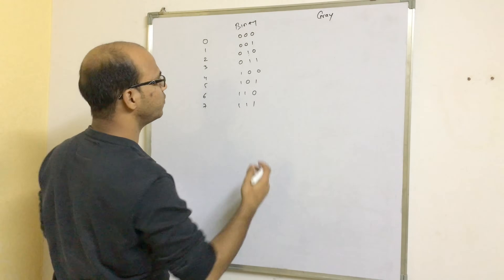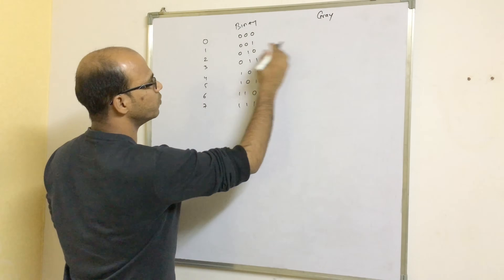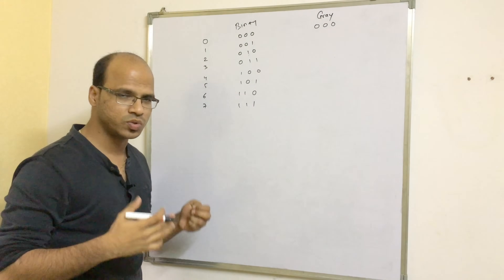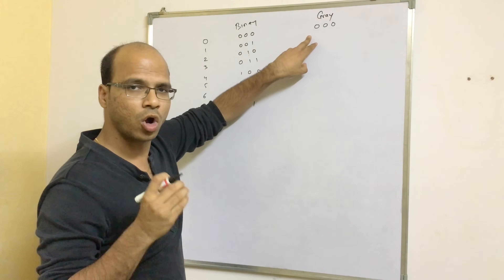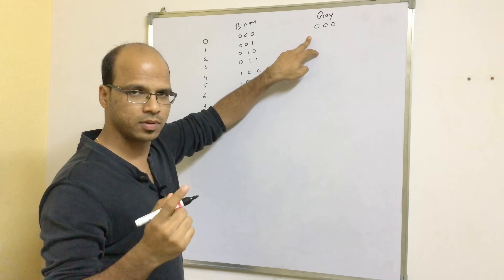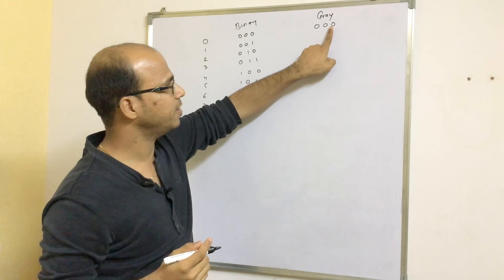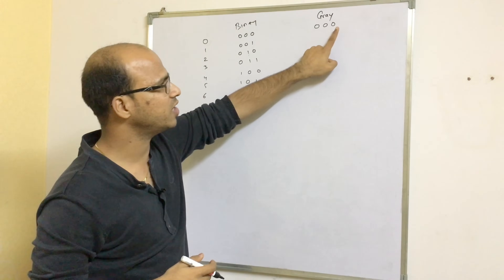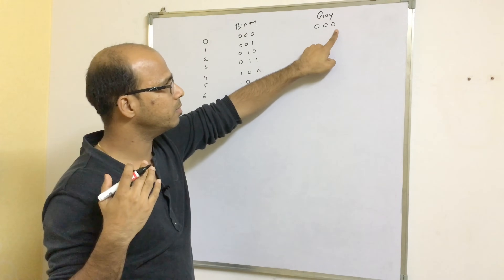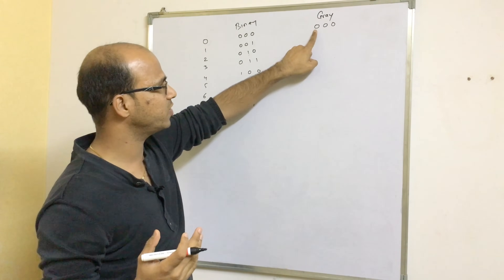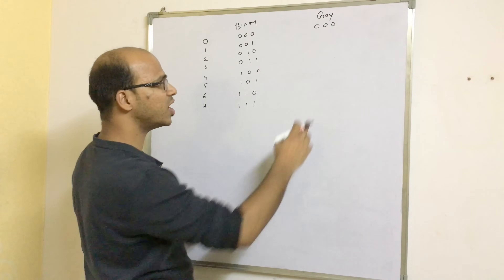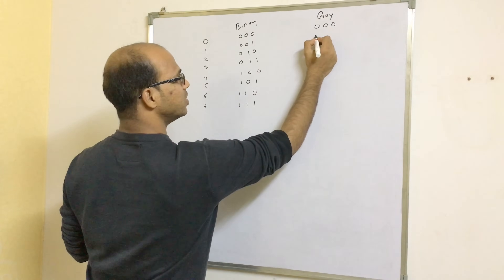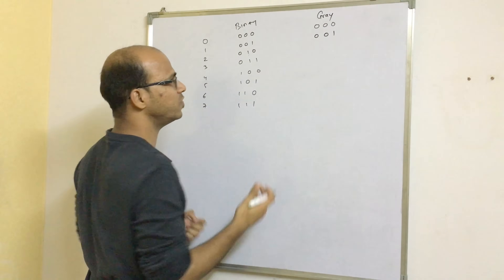In gray code, we start with the first three zeros as it is — we cannot change that. To get the next number, always change only one bit. It can be the last bit, the second last, or the third last. We start from the least significant bit to the most significant bit. So we can start with the first one, which is 0, and make it 1 — so we get 001.